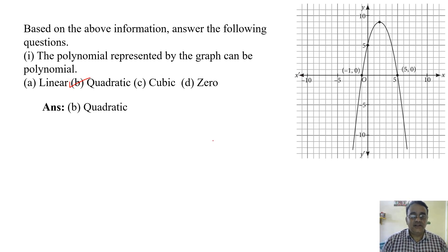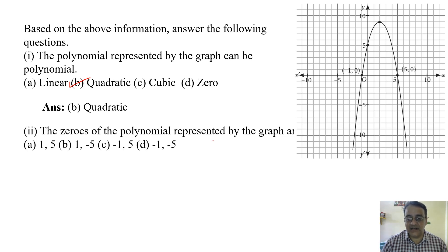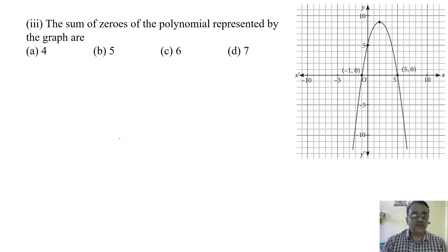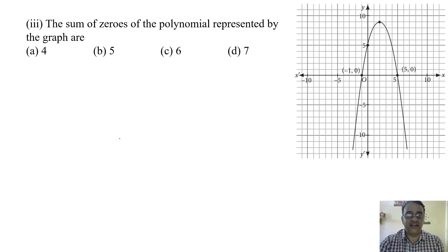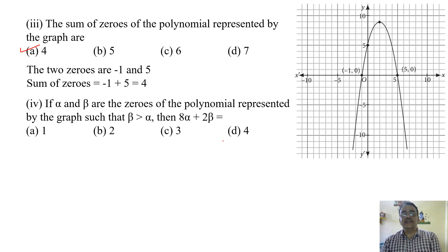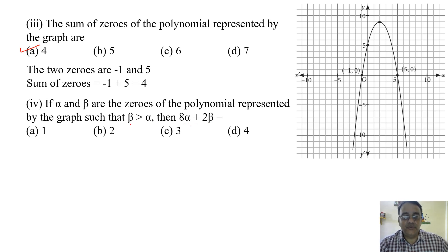The zeros of the polynomial represented by the graph are minus one and 5. Correct option is C. The sum of zeros of the polynomial is minus 1 plus 5 equals 4. Correct option is A. If alpha and beta are the zeros with beta greater than alpha, then beta is 5 and alpha is minus 1.